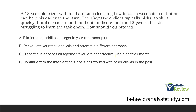A 13-year-old client with mild autism is learning how to use a weed eater so that he can help his dad with the lawn. The client typically picks up skills quickly, but it's been a month and data indicate that he is still struggling to learn the task chain. How should you proceed?